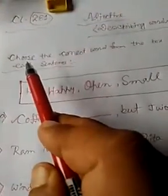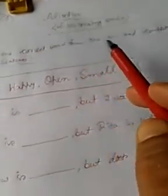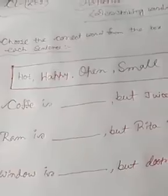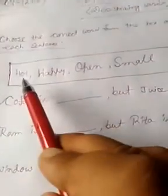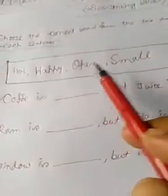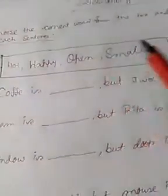What you have to do here? You have to choose the correct word from the box and complete each sentence. You can see there are some fill in the blanks and there are 4 alternatives. All are Adjective or describing words. What are they? Hot, happy, open, small. And in the sentence you have to use this word.